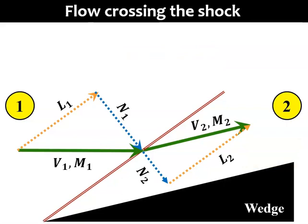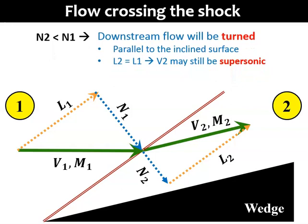Here is another important part. When we finally combine the two vector components downstream, N2 and L2, they become V2. Because N2 is shorter than N1, and L2 equals L1, the downstream flow will be turned. And this deflection has to be exactly right, such that the V2 flow is parallel with the inclined surface. Also, because L2 remains as L1, the flow may still be supersonic.